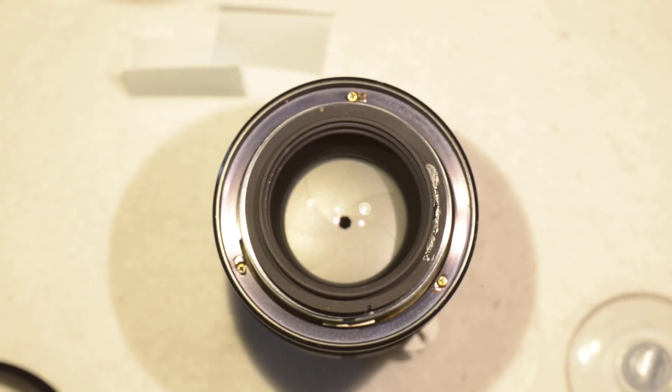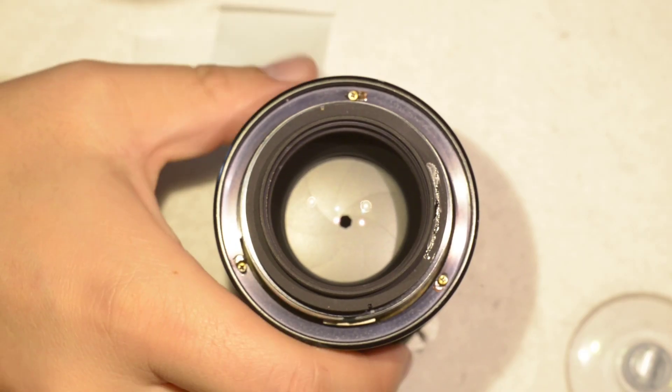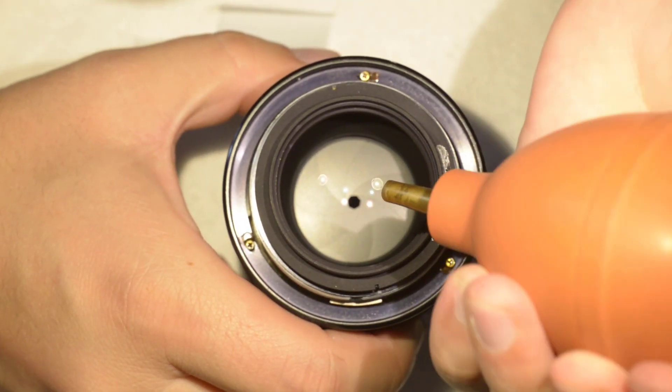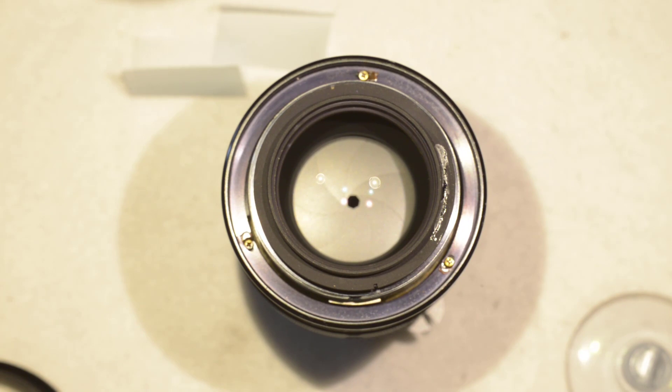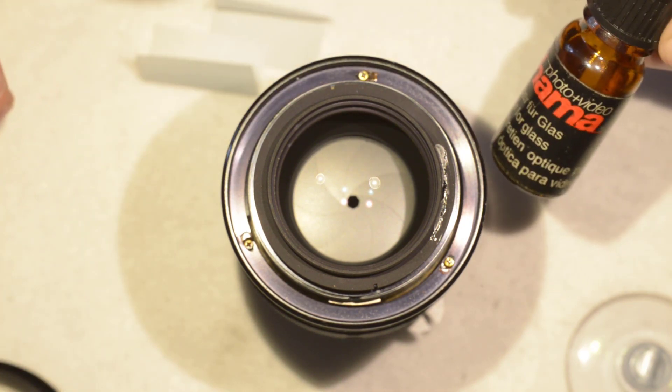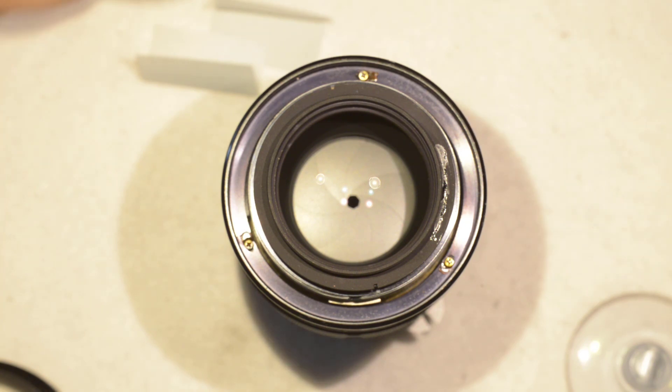Okay, so we're back for the cleaning. The cleaning is simple - I have a blower just to remove the dust, and then what will be of interest to us is the optical cleaning paper and the diluted isopropyl alcohol, because this is what we're going to use to remove the haze.